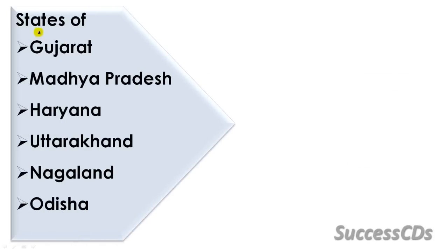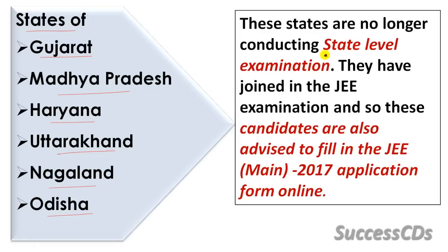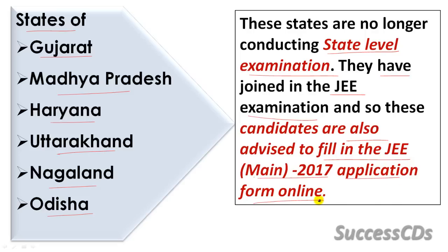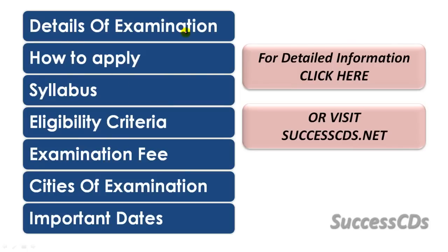Here is some important information for the states of Gujarat, Madhya Pradesh, Haryana, Uttarakhand, Nagaland and Odisha. All these states are no longer conducting their own state level examinations. They have also joined the JEE examination and all candidates who want to apply to these states are also advised to fill in the JEE MAIN 2017 application form online.